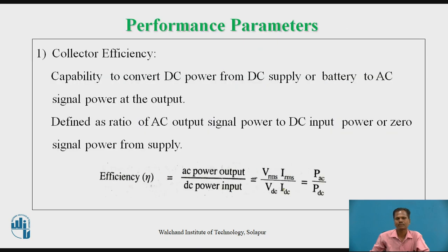Now let us examine the performance parameters of a power amplifier — to measure the performance or effectiveness of a power amplifier by considering different parameters. The first parameter is collector efficiency: it is the ability of the power amplifier to convert DC power from the DC power supply or battery into AC signal power at the output. It is defined as the ratio of AC output signal power to DC input power. So efficiency η equals AC power delivered to the output load divided by DC power input supplied in the collector circuit of the power transistor from the DC power supply — that is, P_AC divided by P_DC.